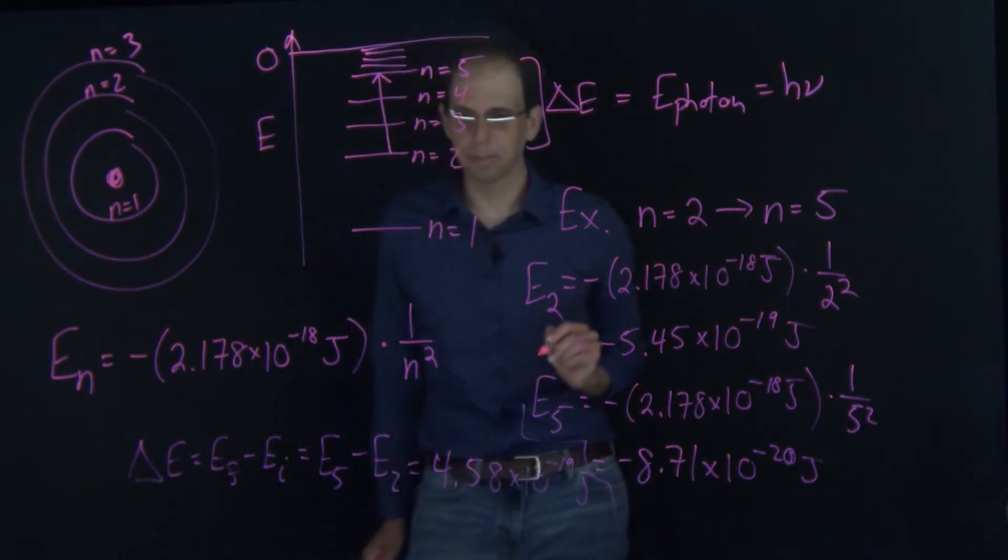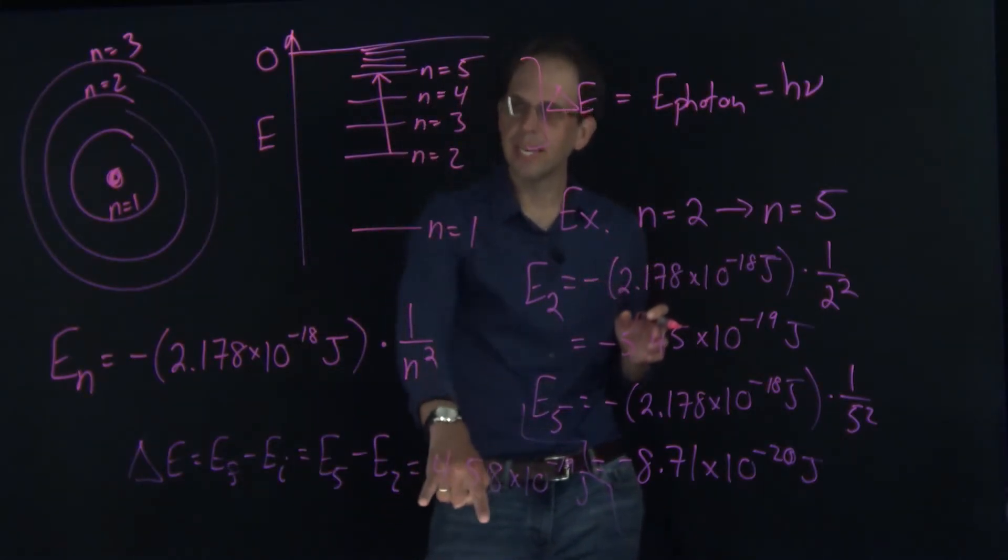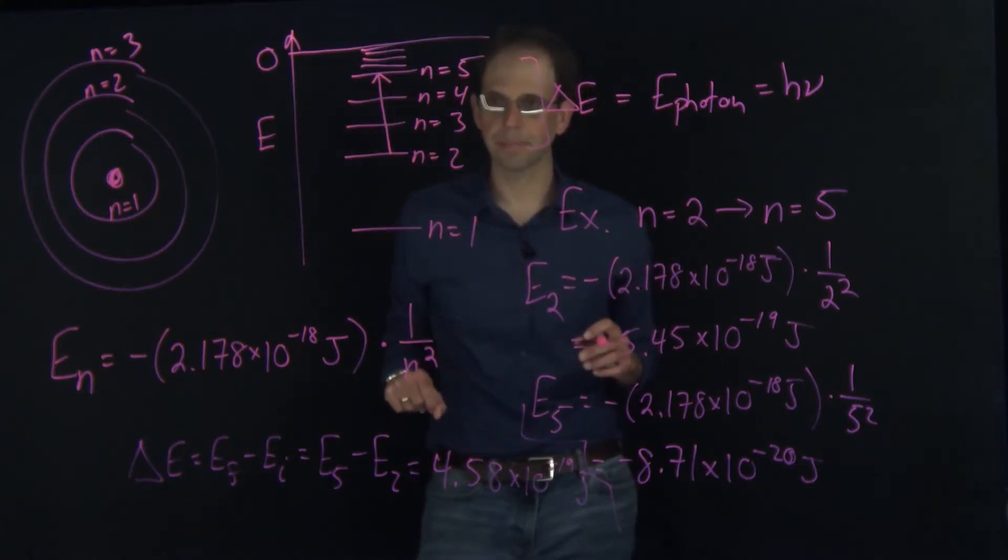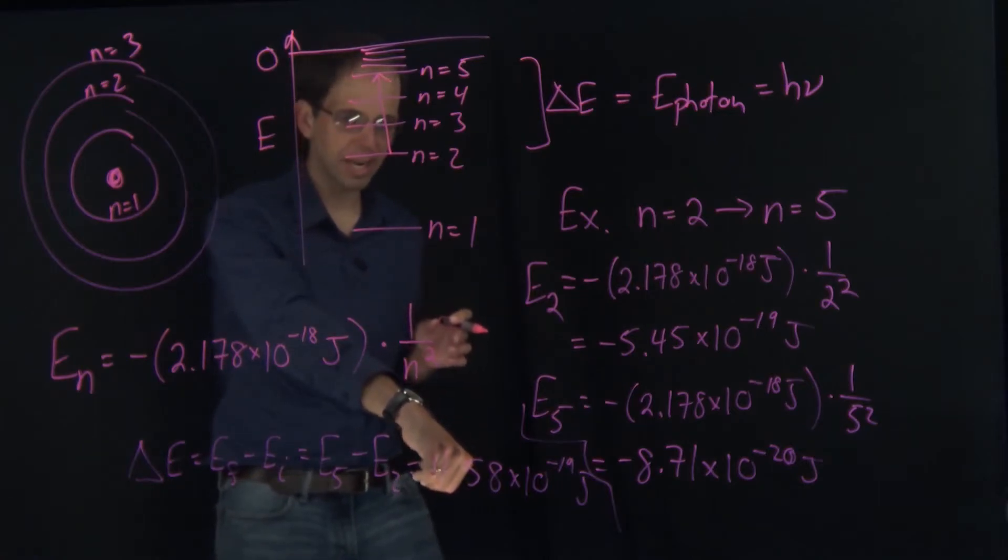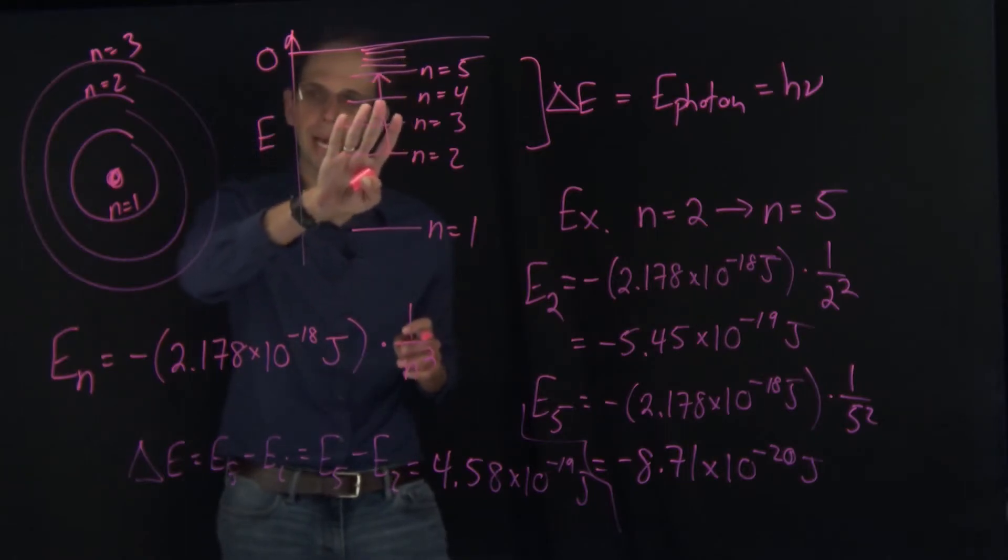Sorry about putting those so close together. So this is the amount of energy I need in my photon to cause that excitation. You'll notice this has a positive sign. That positive sign is associated with absorption. There's energy going into the system, into my atom.